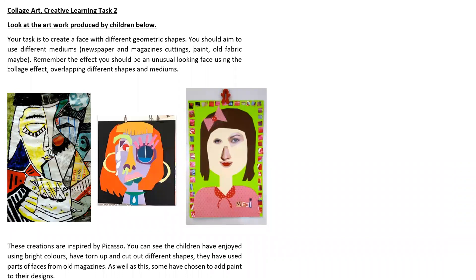Collage Art Creative Learning Task 2. Look at the artwork produced by the children below. Your task is to create a face with different geometric shapes. You should aim to use different mediums: newspaper and magazine cuttings, paint, or fabric. Remember, the effect should be an unusual looking face using the collage effect, overlapping different shapes and mediums. These creations are inspired by Picasso. The children have enjoyed using bright colours, torn and cut out different shapes, and used parts of faces from old magazines. Some have chosen to add paint to their designs. Remember, this is your own unique design — you're trying to recreate Picasso's style, not do exactly the same. You can use whatever resources you have available at home.